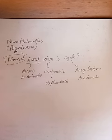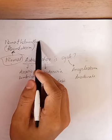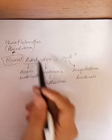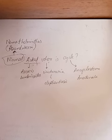So the trick is 'Nirmal Aagst Vericycle.' You have to remember: Nirmal stands for Nemathelminths, whose common name is roundworm. And Aag gives you Ascaris.